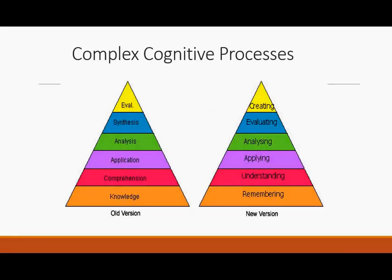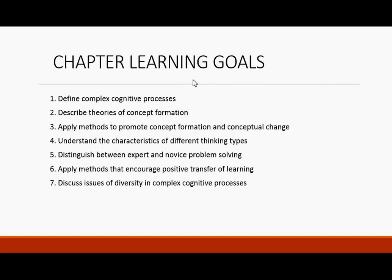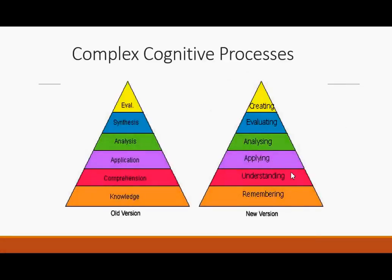We'll focus on the newer, more active-oriented version of learning objectives. Application is applying. We want students to remember, understand, and when we make learning objectives, we want application of methods, understanding, and distinguishing. A student is more likely to actually encode the information and truly remember it if they are doing these things — creating, evaluating, analyzing, applying, understanding — with the most basic being to remember.